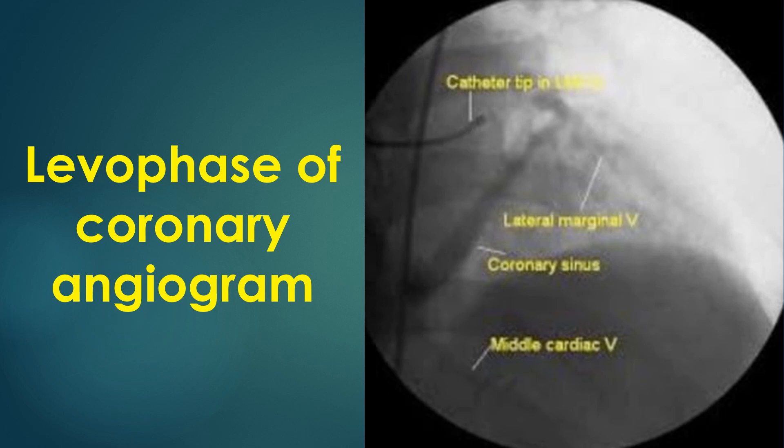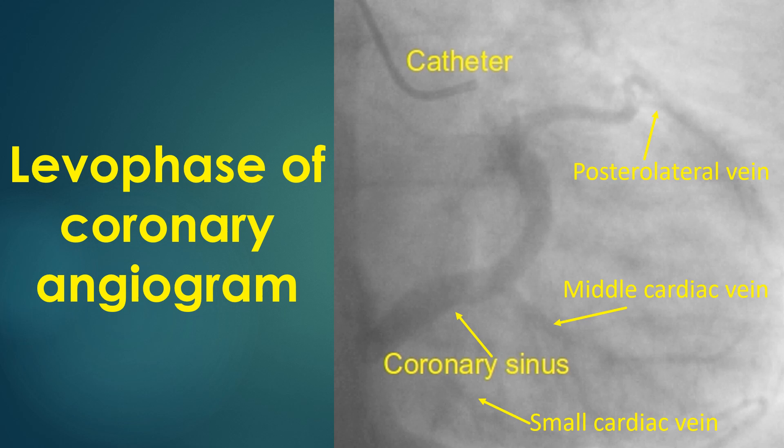The catheter tip of the left Judkins catheter introduced via the transfemoral route is engaging the ostium of the left main coronary artery. In another case, the coronary angiogram levophase shows the catheter engaged in the left main coronary artery. The artery is not visible as it is the levophase.